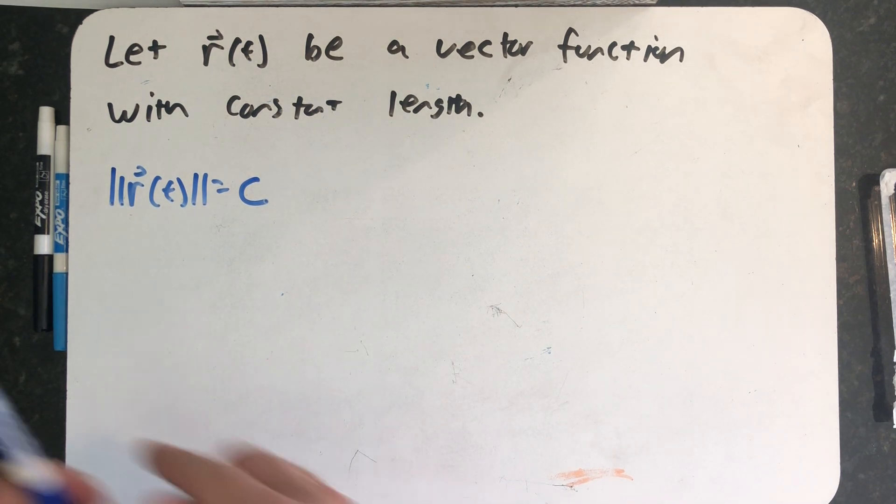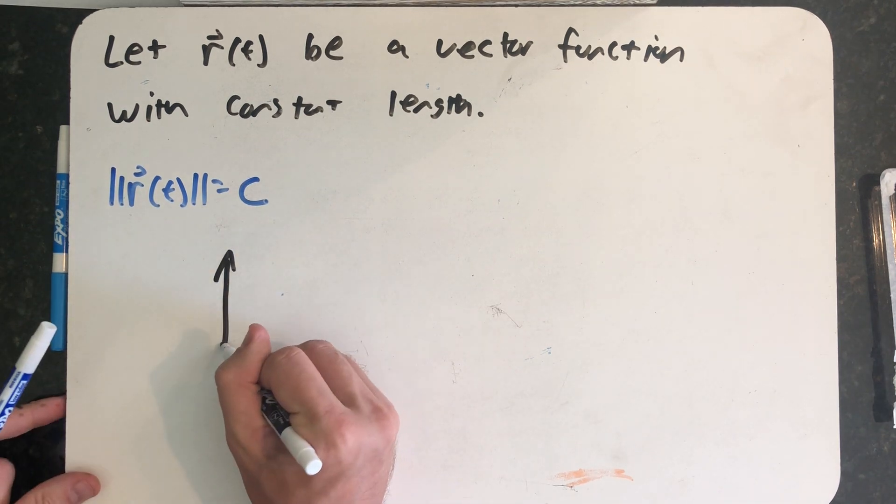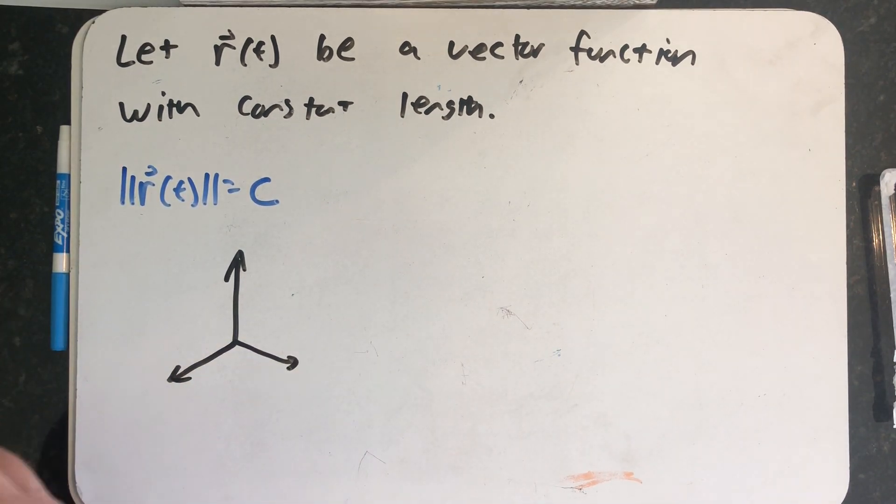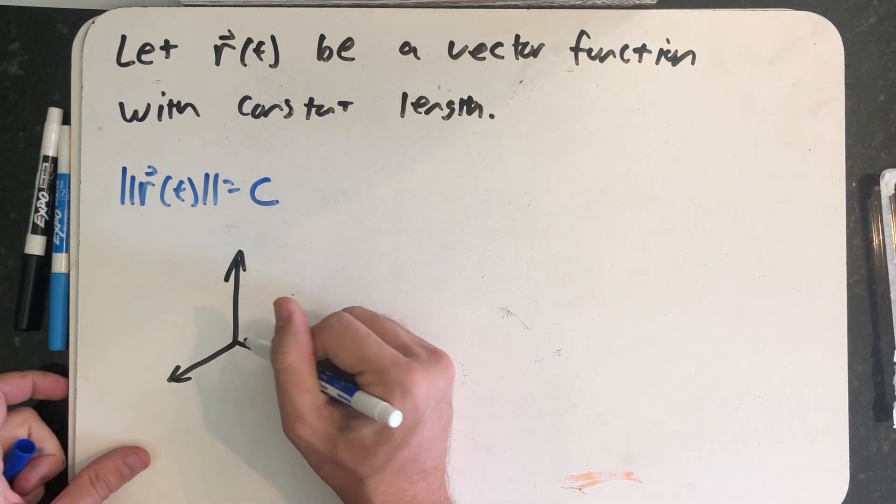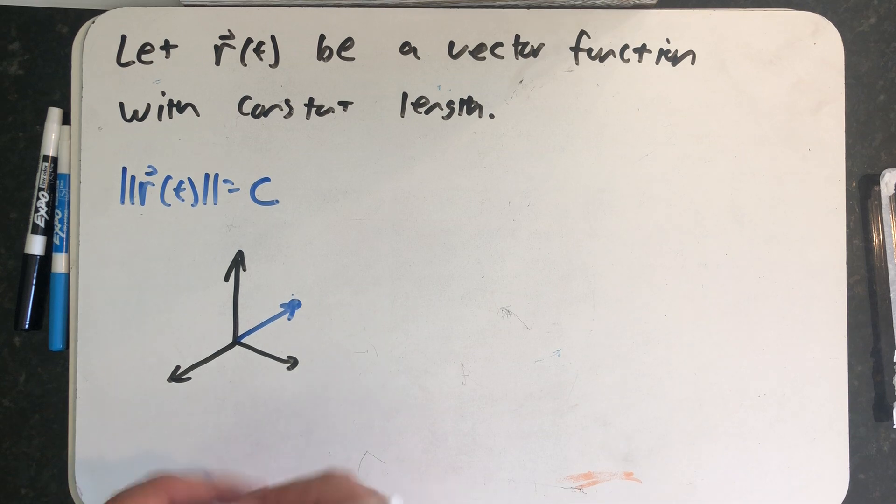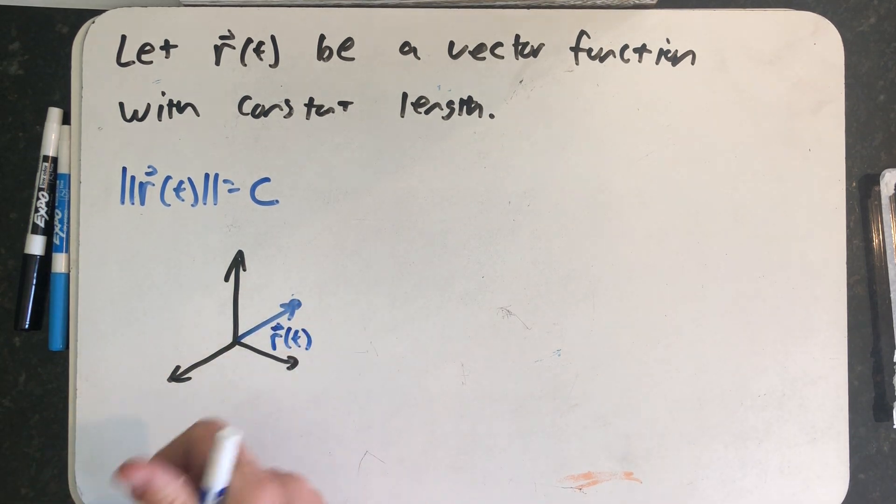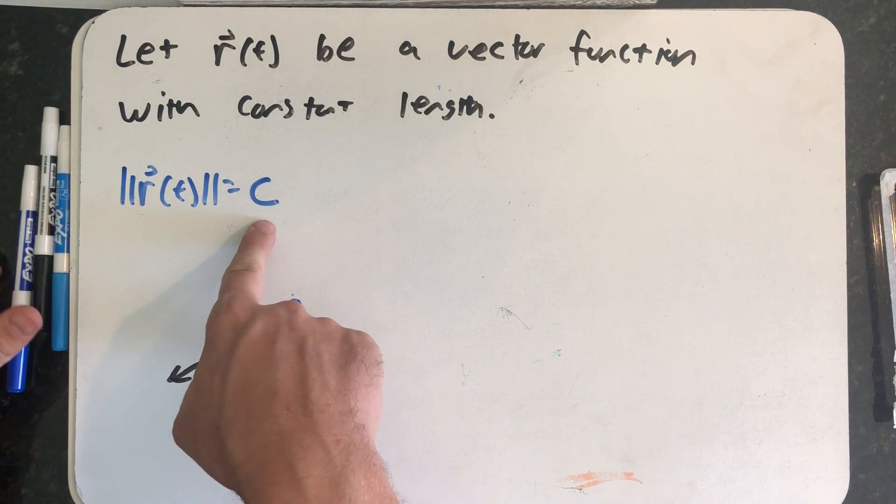And think about what R of t does. For every value of t, R of t points from the origin to that point on the curve. So whatever value of t I plug in, this is saying that I'm always c away from the origin.